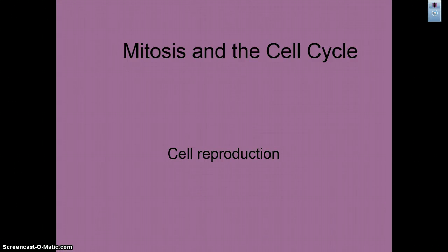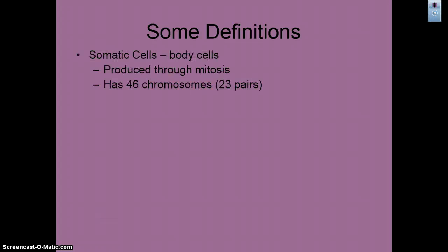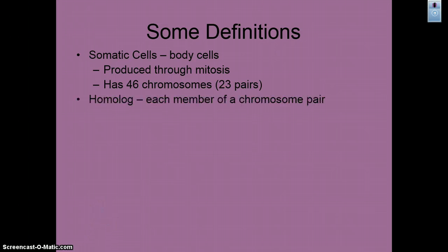We're going to review mitosis and the cell cycle for anatomy. Definitions that you need to remember: somatic cells — the proper name for body cells — are produced during mitosis. In humans, we have 23 pairs of chromosomes in these cells, or 46 total chromosomes.